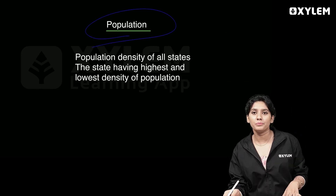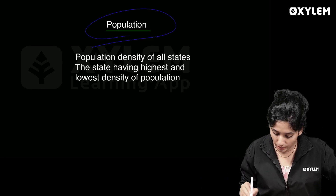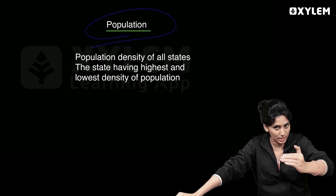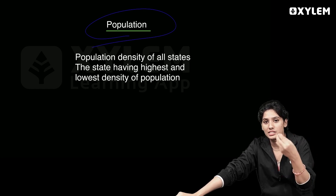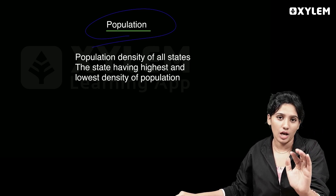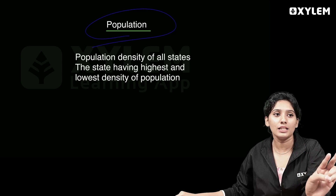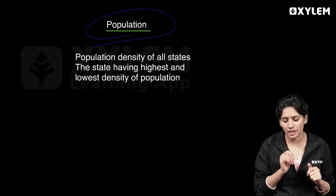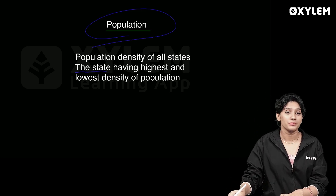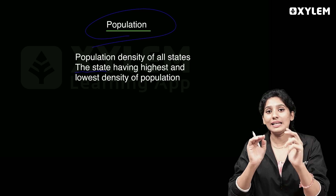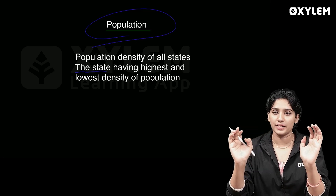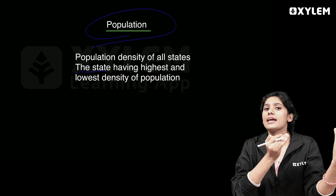The next chapter is Population. Population density of all states — including the states having the highest and lowest density of population. We are going to study population density, locating and labeling states with high and low population density.